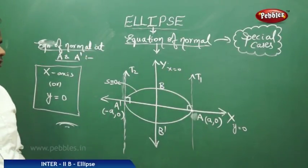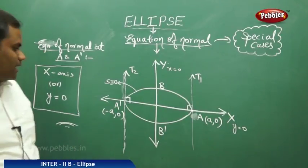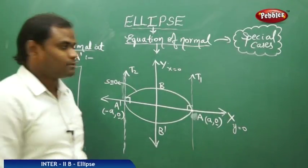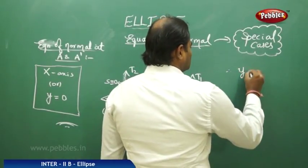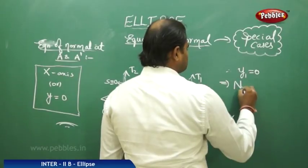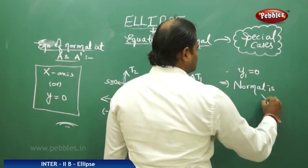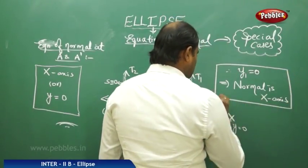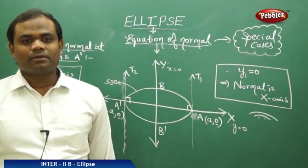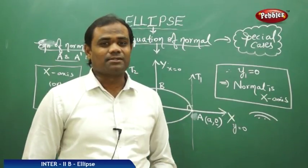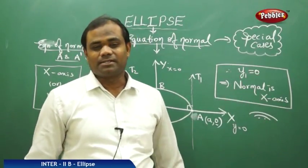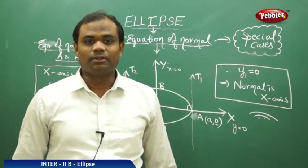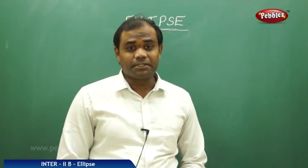Therefore, in general conclusion for any ellipse: if the y-coordinate is 0, the normal is the x-axis. So y1 = 0 implies the normal is the x-axis, i.e., y = 0. And x1 = 0 implies the normal is the y-axis, i.e., x = 0. These are the special cases connected with the equation of normal. Now let's see the equation of tangent in parametric form.